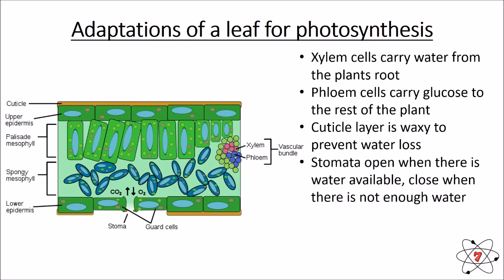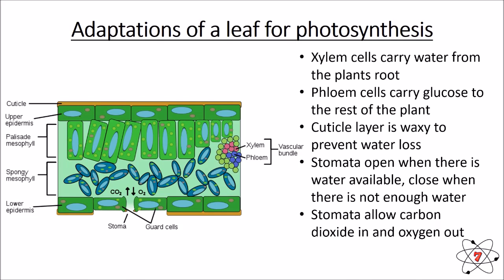The stomata — holes at the bottom of the leaf — open when water is available, allowing carbon dioxide in and enabling photosynthesis to occur. They close when there is not enough water, preventing excess water loss, and reopen when conditions are correct again. The stomata also allow the waste product oxygen to exit the leaf.